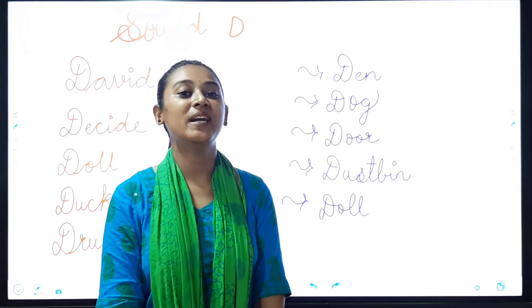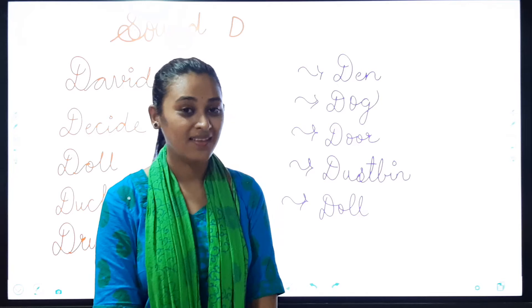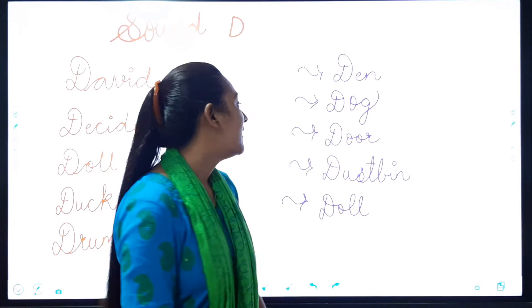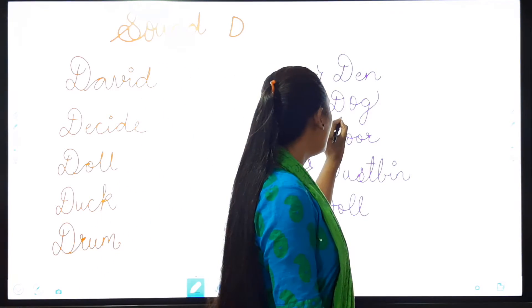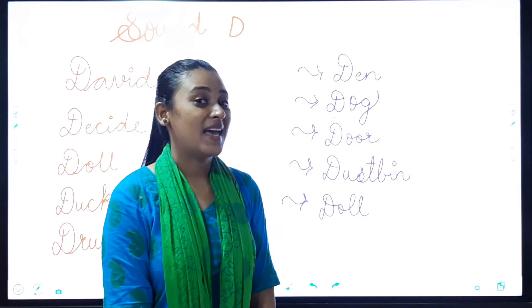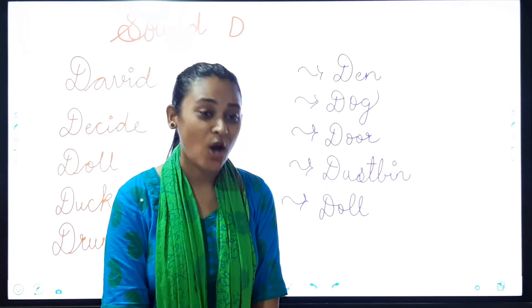Next students. Bolo mere saath. Dog. Kya? Dog. Yes. Iska starting word kya hai? D. Dog. Yes.